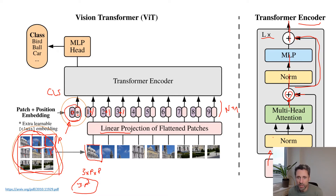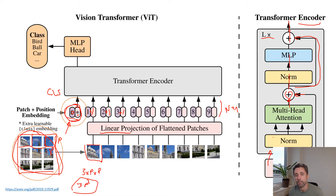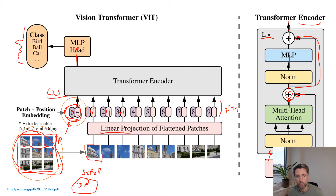You then take only the first token — the CLS token — which through the process of mixing all those values according to the attention map should contain information from all the patches. You push this into a normal MLP, which does a softmax classification over the output classes, telling you what kind of content is in the image. That's the architecture: a simple way to integrate everything into a representation, and a simple way to break down the image into patches, using the normal NLP transformer.